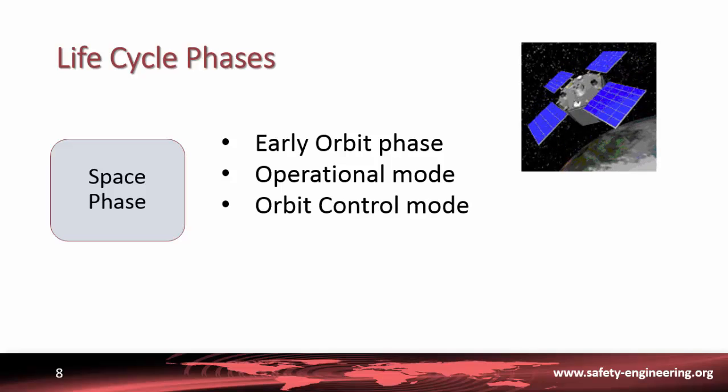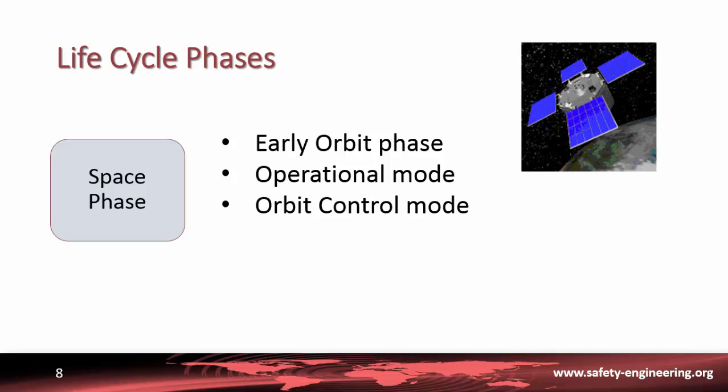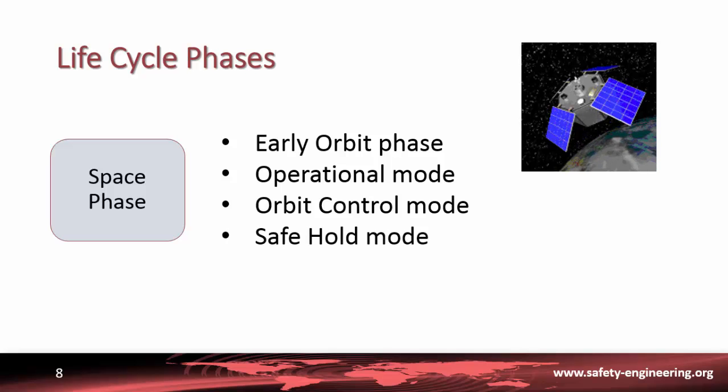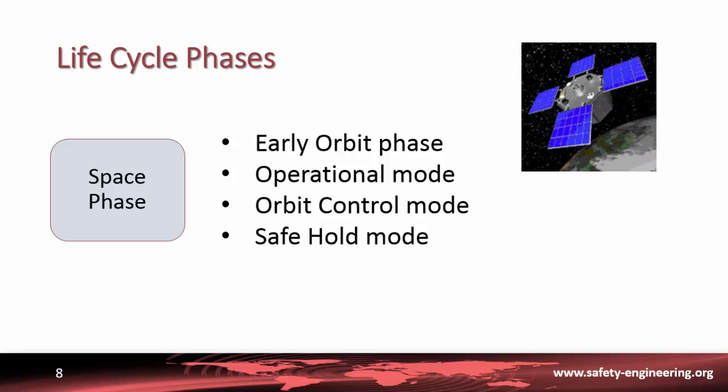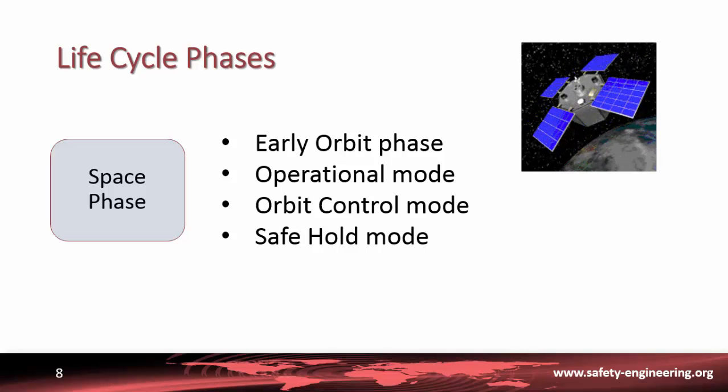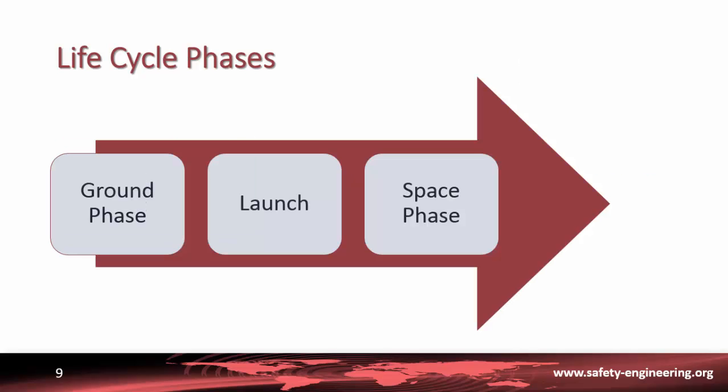Third, the orbit controlled mode, when the satellite has to be repositioned on its working orbit to perform its mission. And finally, the safe hold mode, in case of detection of any critical event that might indicate loss of control or dangerous conditions. Finally, the fourth phase of the overall life cycle is the disposal, when the satellite finishes its mission.